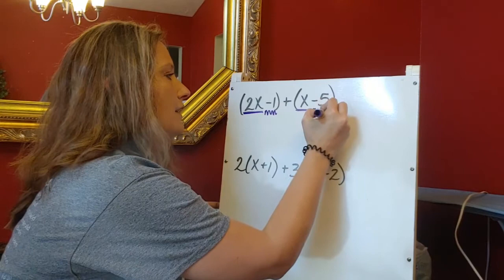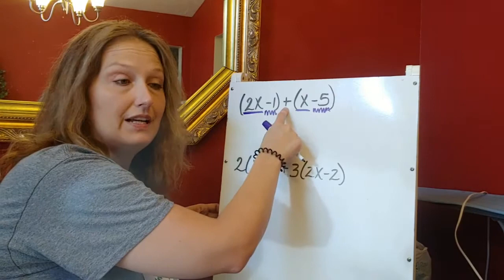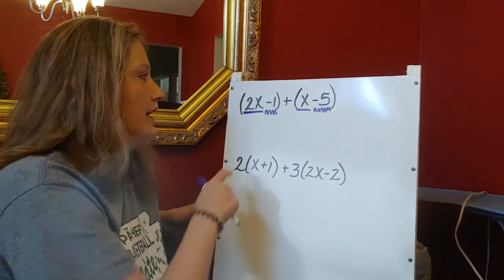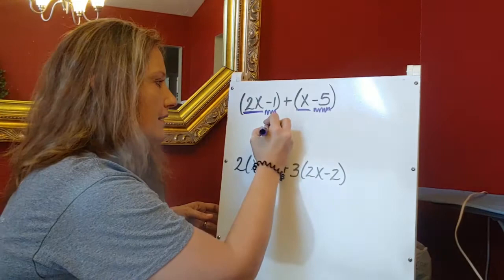And then I have my constants, negative one and negative five, and I'm just going to combine those together. I am adding these, so that makes it a little easier. We'll get into subtraction later.